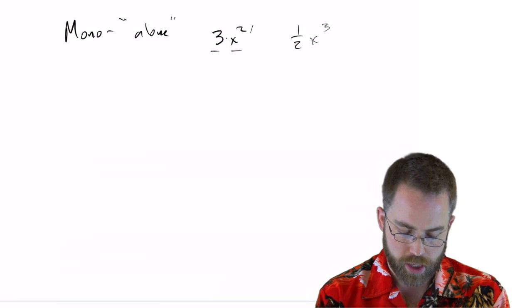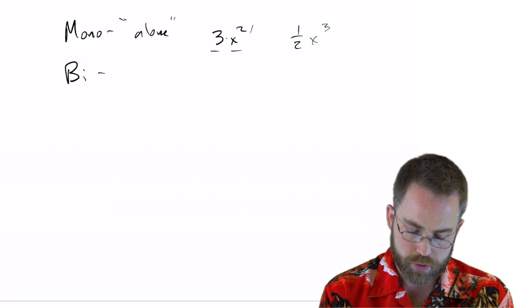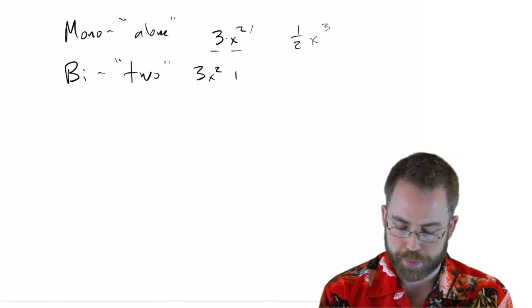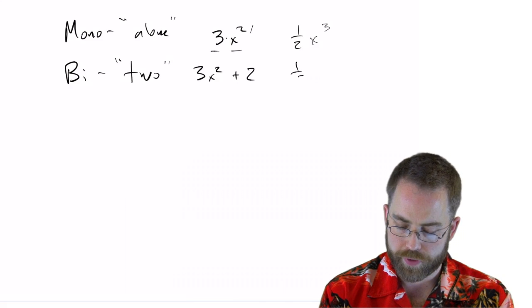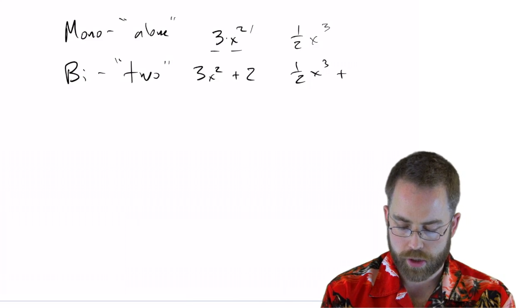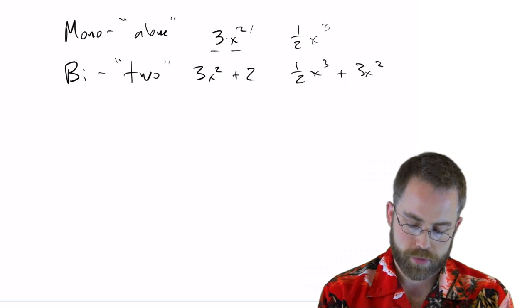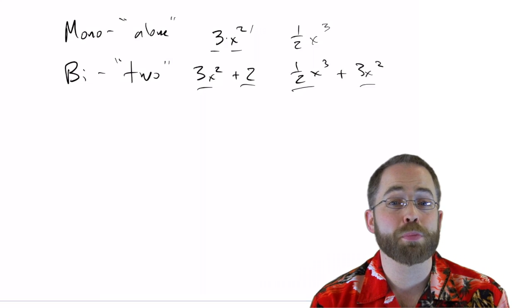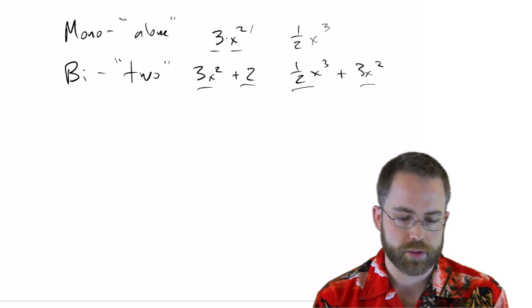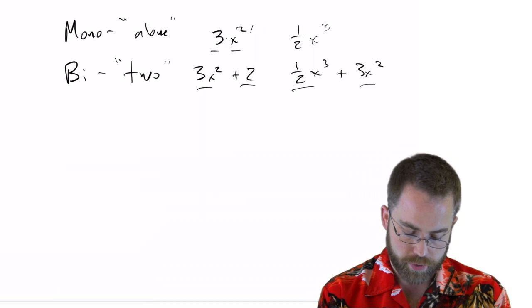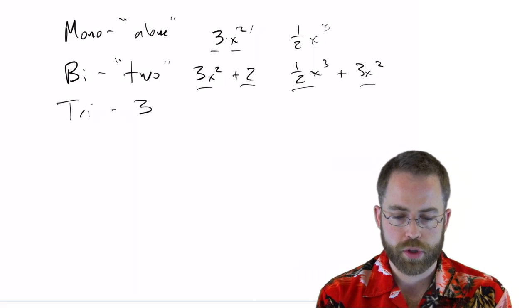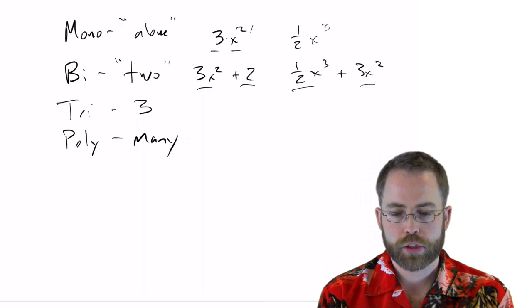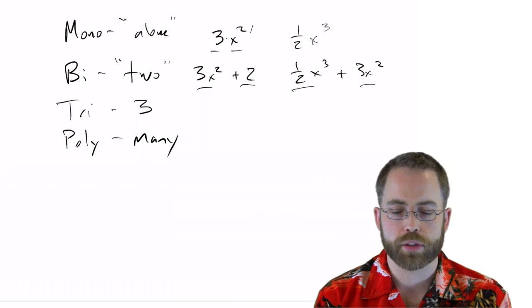A binomial, which is the prefix meaning two, is when you have 3x squared plus 2 or half x cubed plus 3x squared. There are two things and you can tell there are two things in each example because of the plus sign or it could have been a minus sign. A trinomial would have three parts like a tricycle is three and poly is just a prefix meaning many. So when we string together a bunch of these, it's a polynomial.